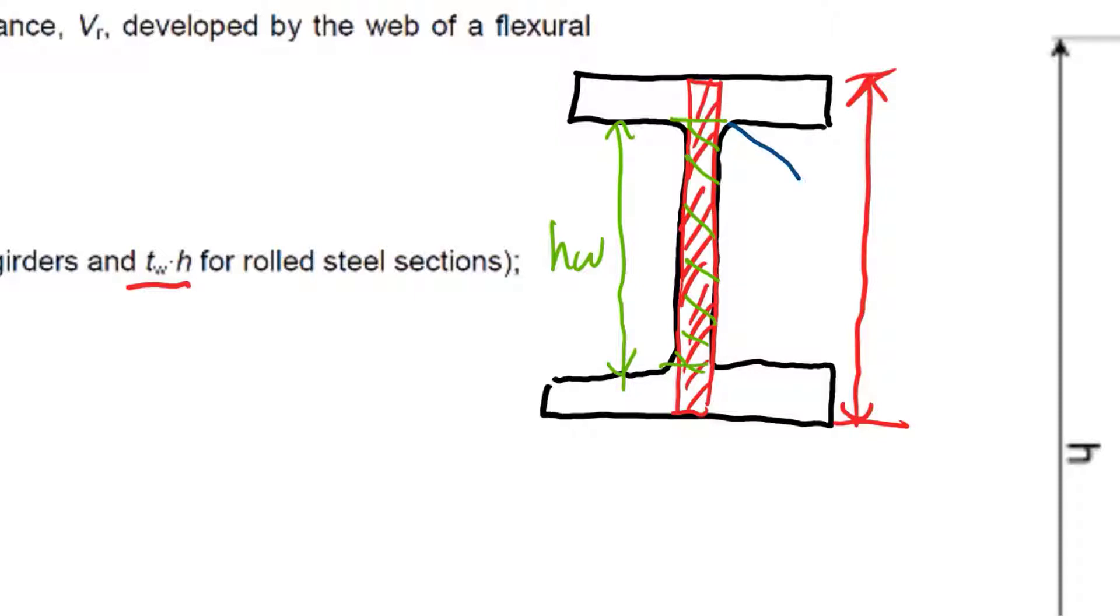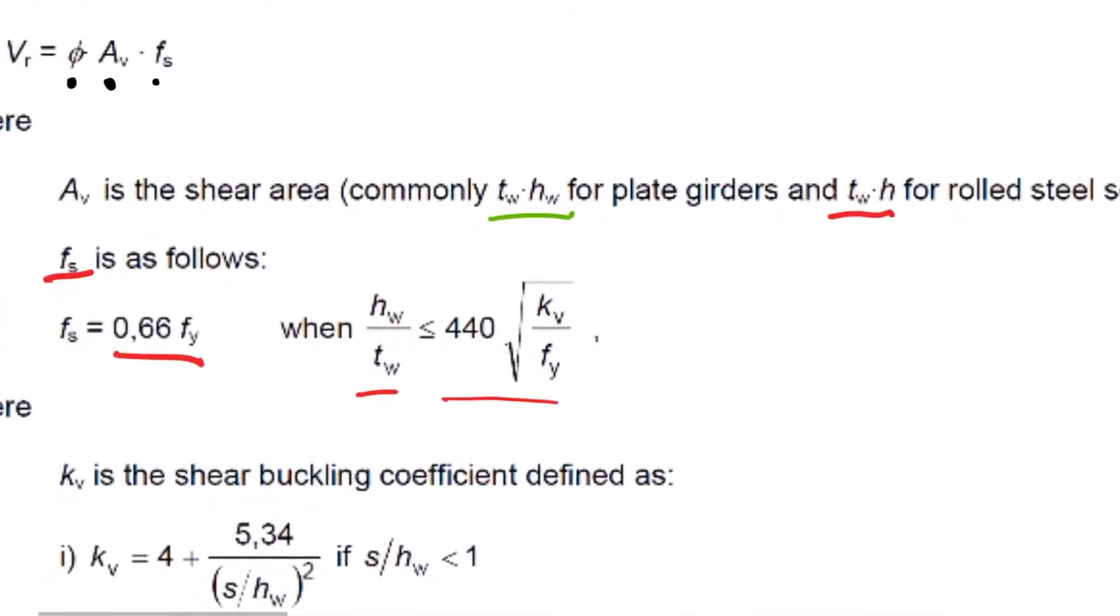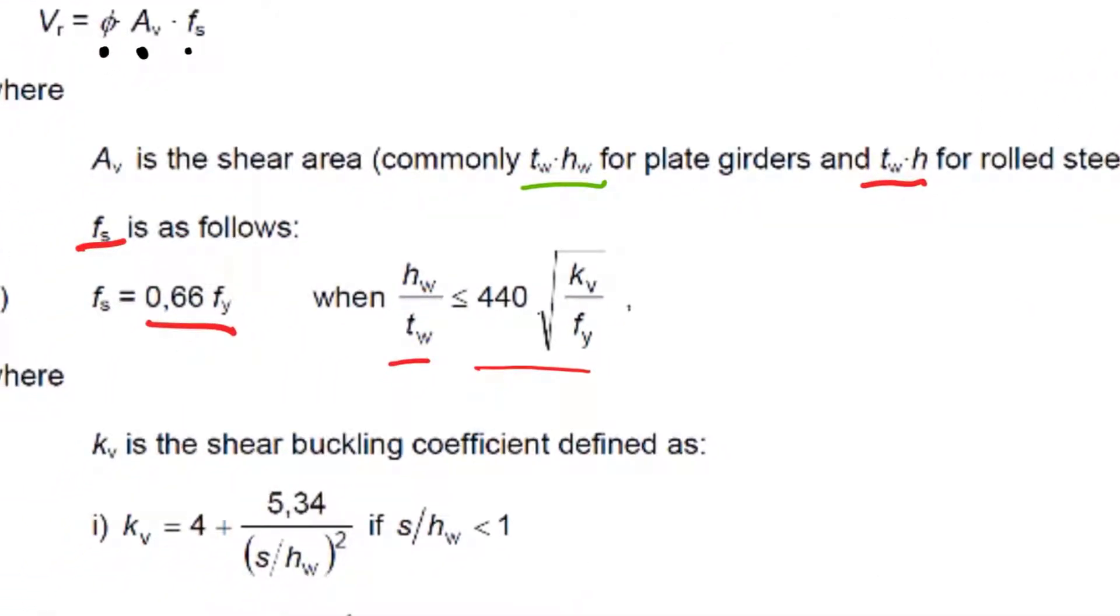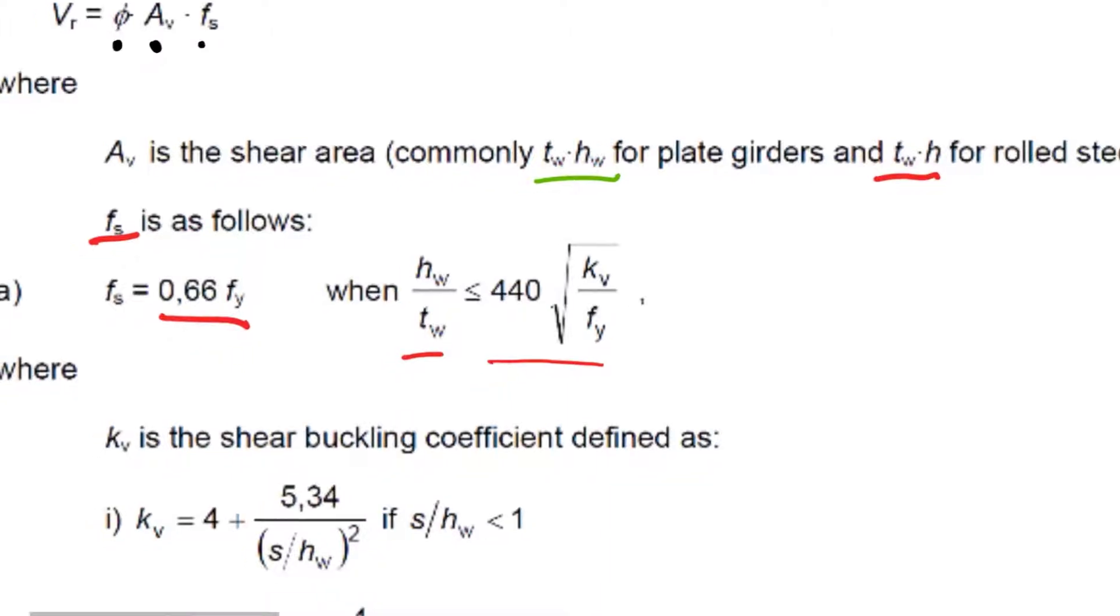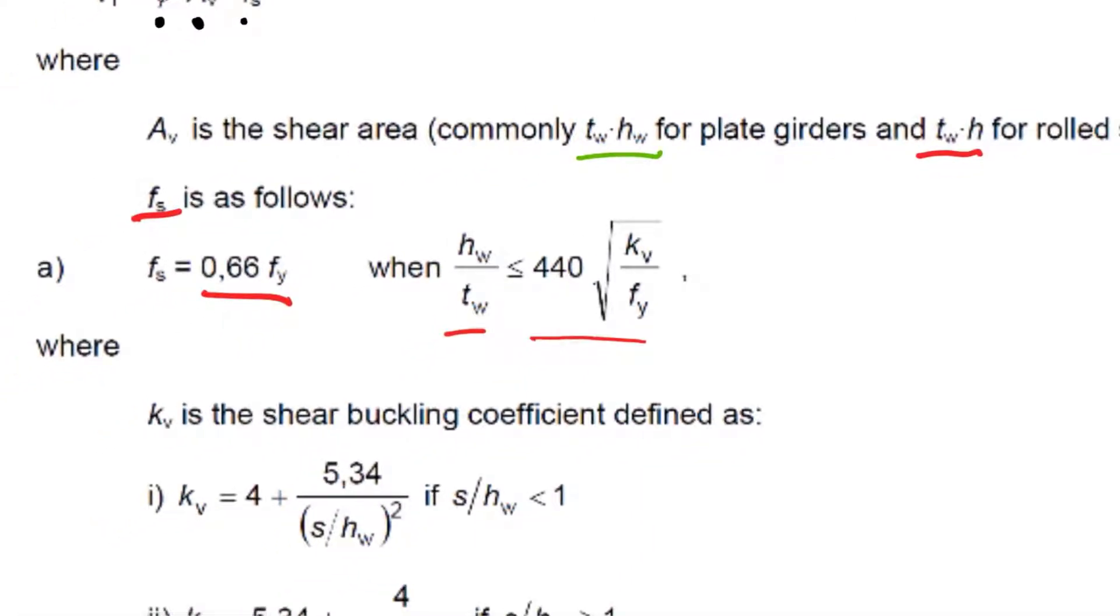We don't have something like this occurring, because if this web got long and thin we would then have the web actually buckling out. If we check it and find that this complies, then we can use the simplified shear design. You will typically find that almost all the sections in the red book in South Africa comply with that equation. That's the limit unless you typically have plate girders before shear buckling starts to become a problem.